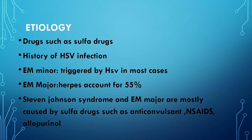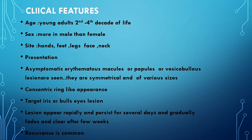The etiology: drugs are the main cause of erythema multiforme. Sulfa drugs play a main role in triggering it. HSV (herpes simplex virus) infection also plays a main role. Most erythema multiforme minor cases are triggered by HSV infection, while herpes virus accounts for about 55% in major. Stevens-Johnson syndrome and erythema multiforme major are mostly caused by sulfa drugs, anticonvulsants, NSAIDs, and allopurinol.